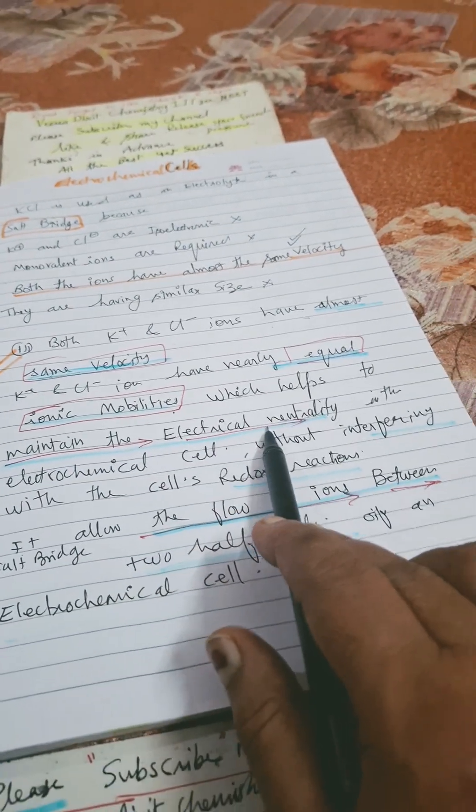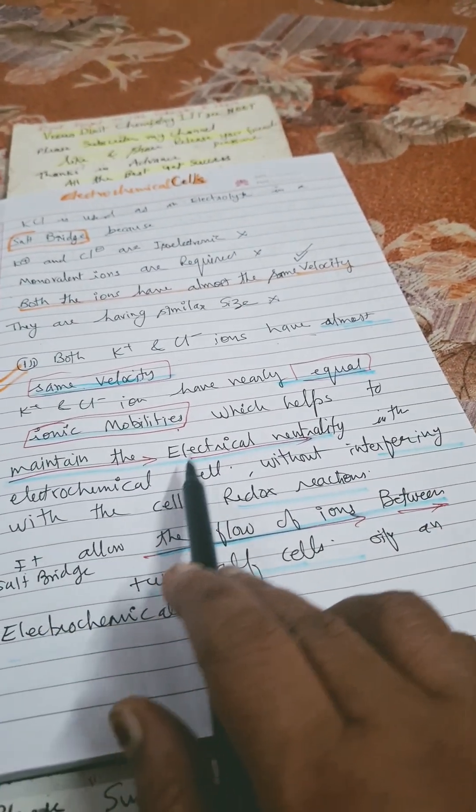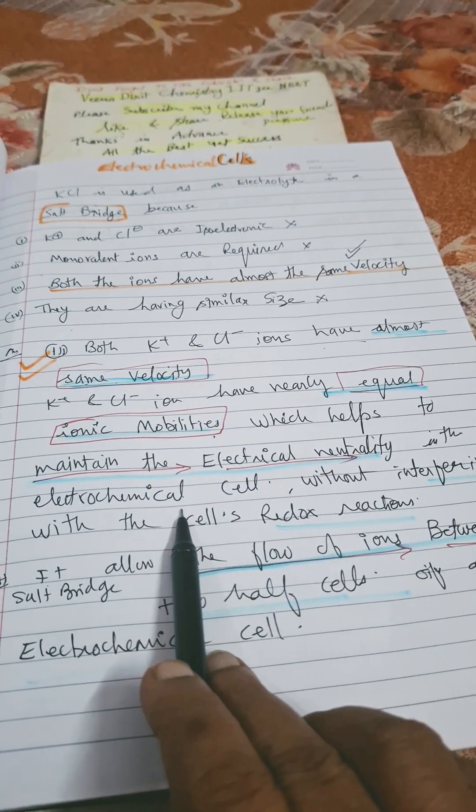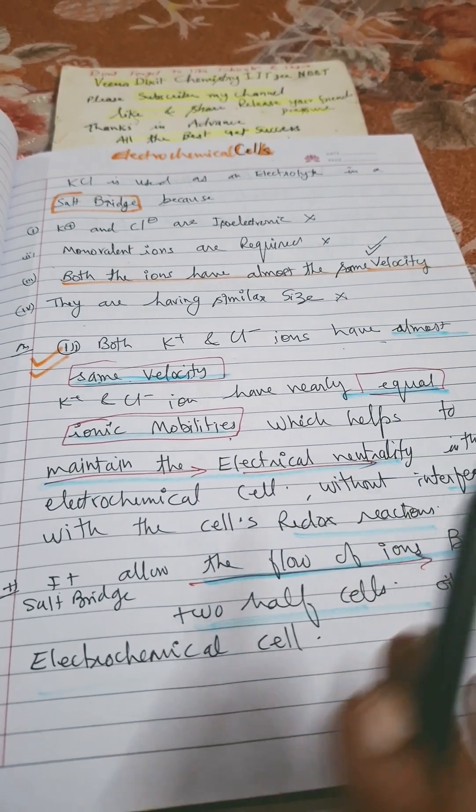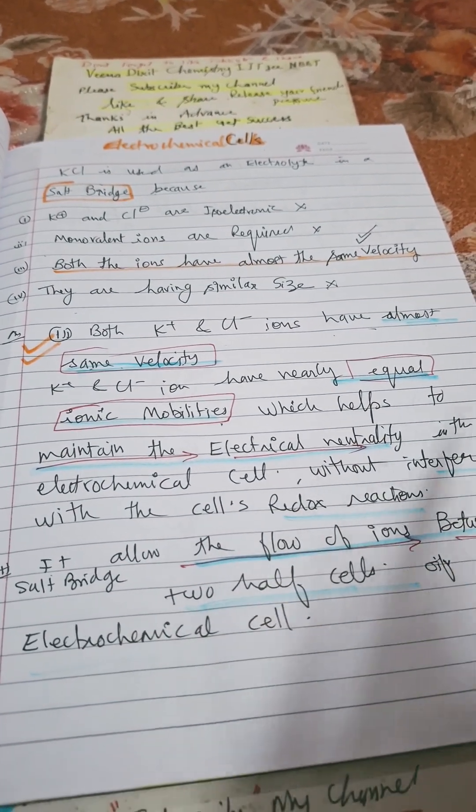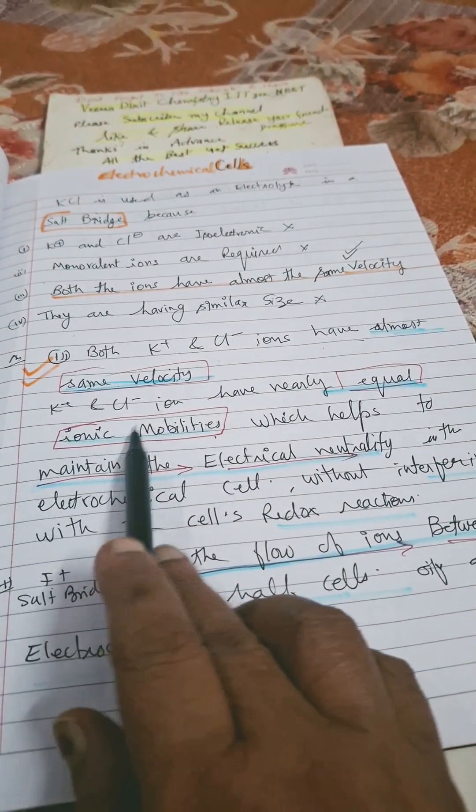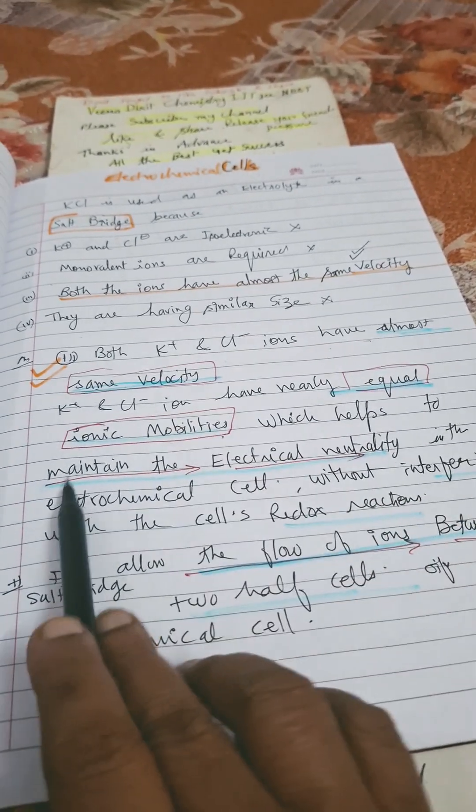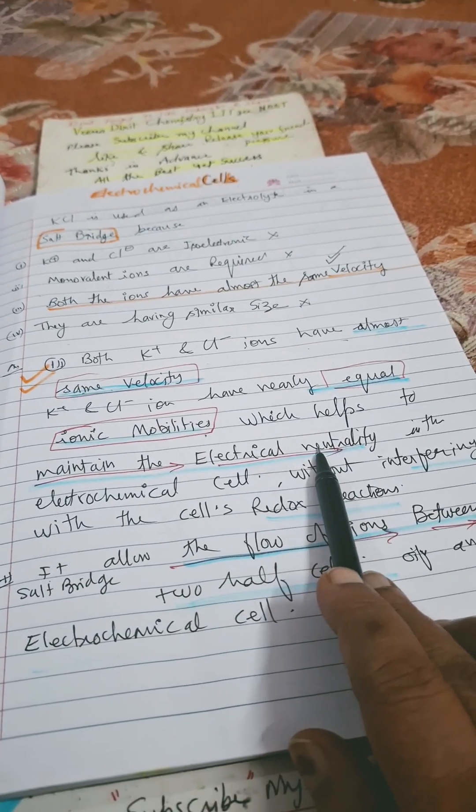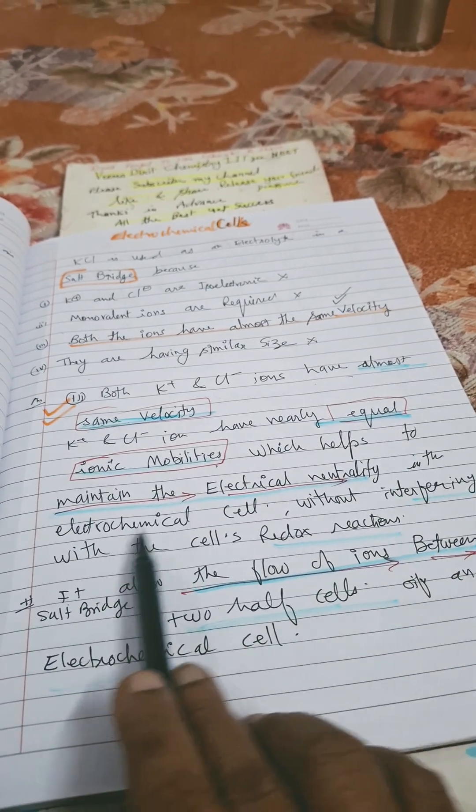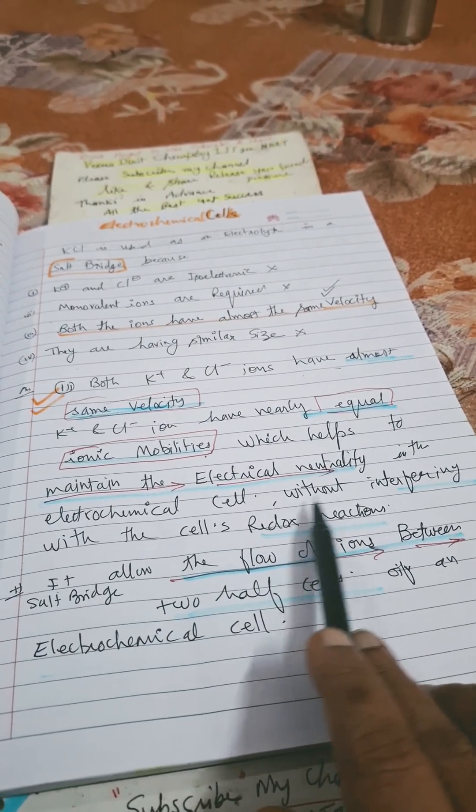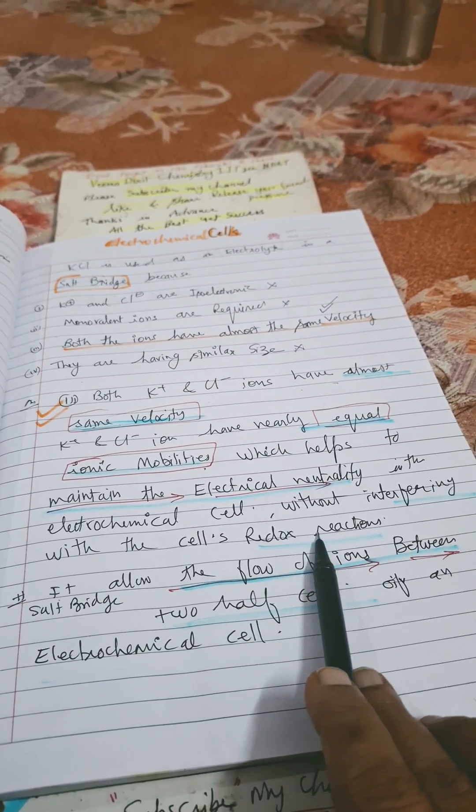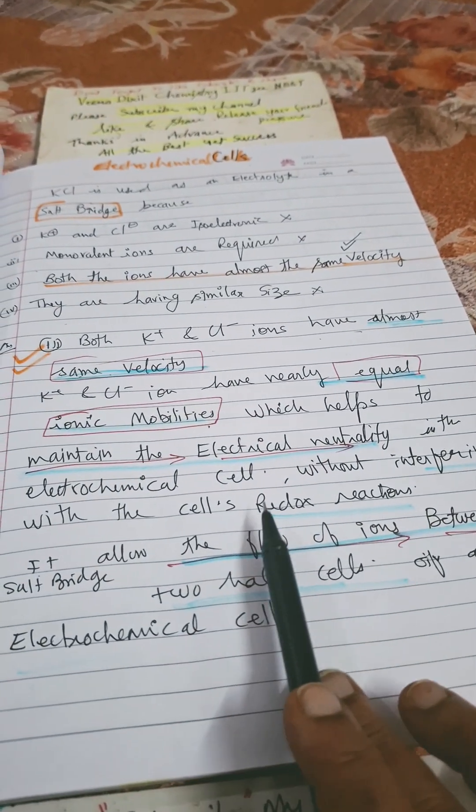Again, I repeat, because this appears several times in board exams, in 11th as well. KCl has nearly equal ionic mobility which helps to maintain the electrical neutrality in the electrochemical cell without interfering with the cell's redox reaction.